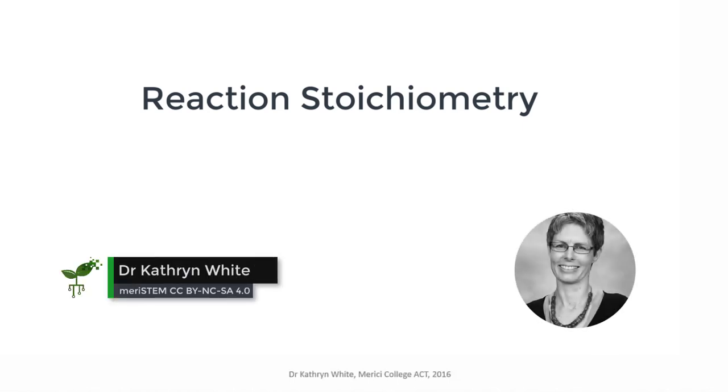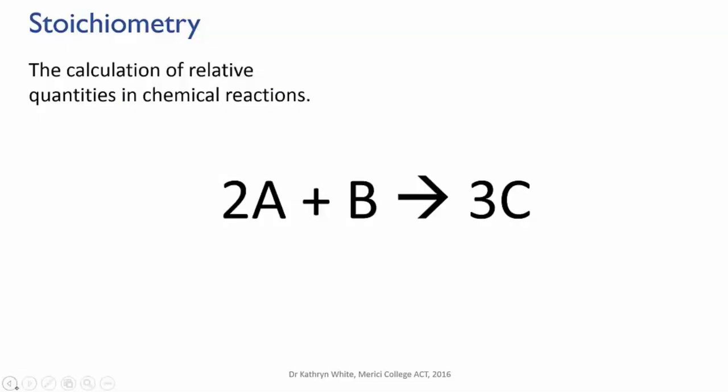We know that one of the powerful things about a chemical equation is that it allows us to make predictions about amounts of chemicals. For instance, in this hypothetical reaction we know that if we have two moles of A, we will need one mole of B to react completely with it, and that when that has happened we'll have three moles of C, the product.